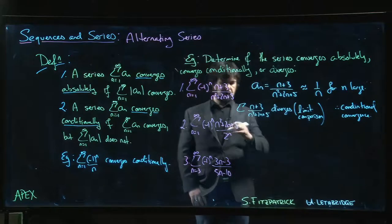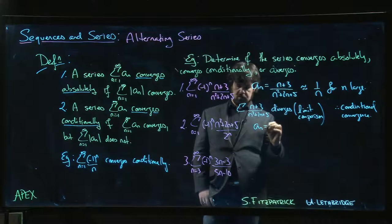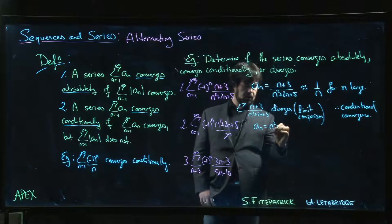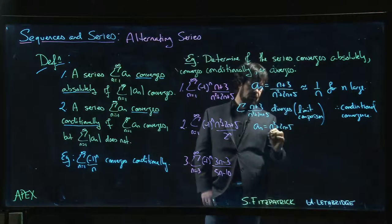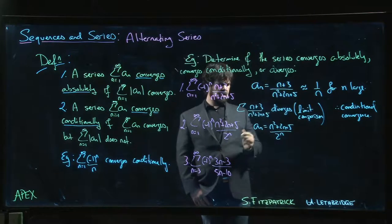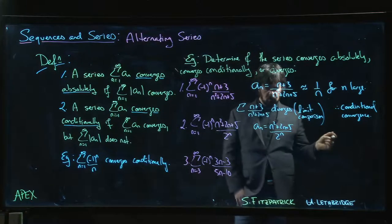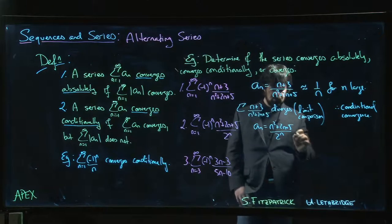If we look at a_n = (n²+2n+5)/2^n, this looks like something where maybe we'd use ratio test. Ratio, possibly root - root is going to get ugly with that polynomial though, so let's do ratio.